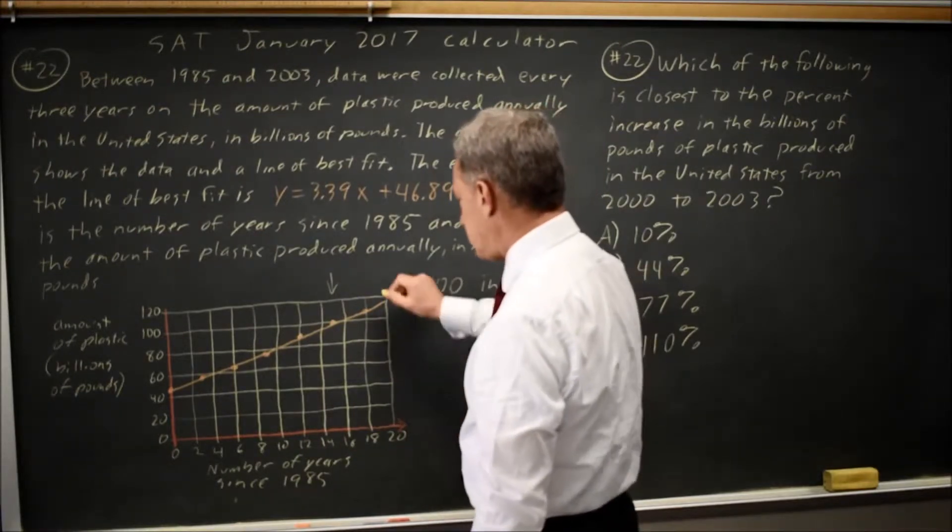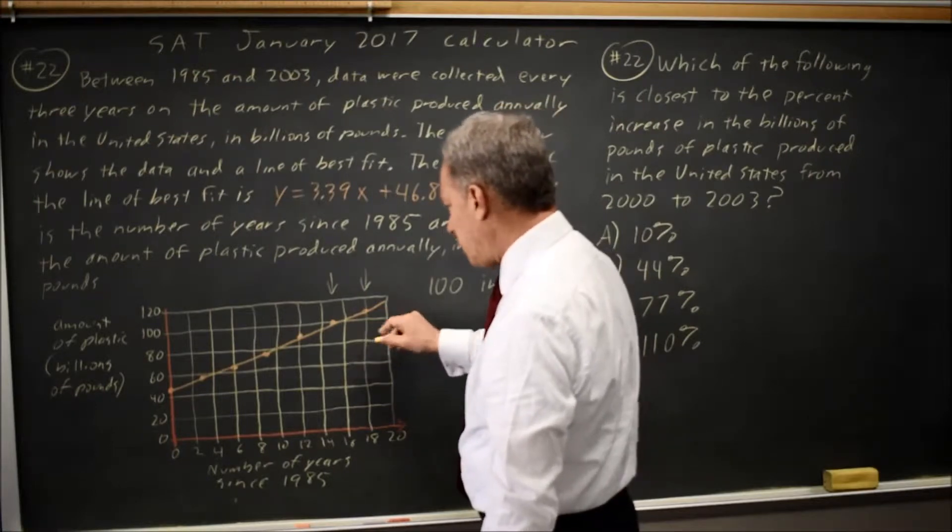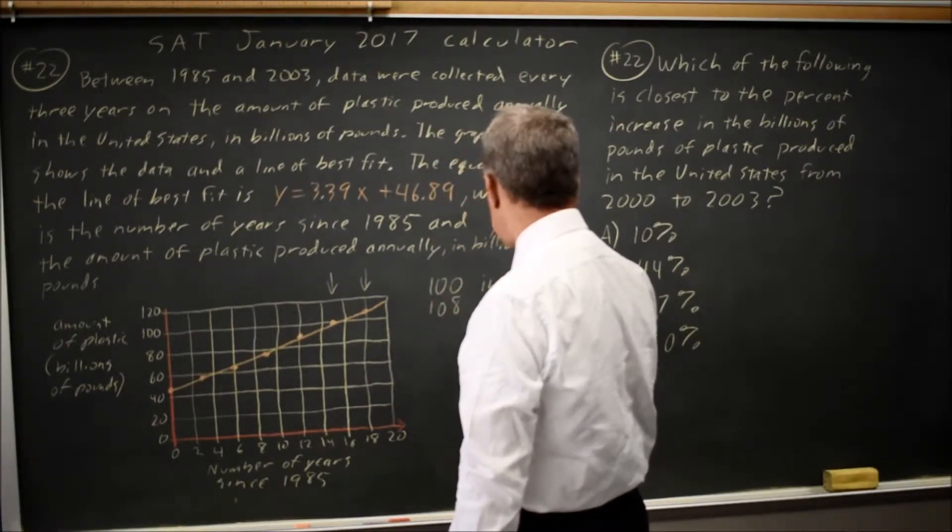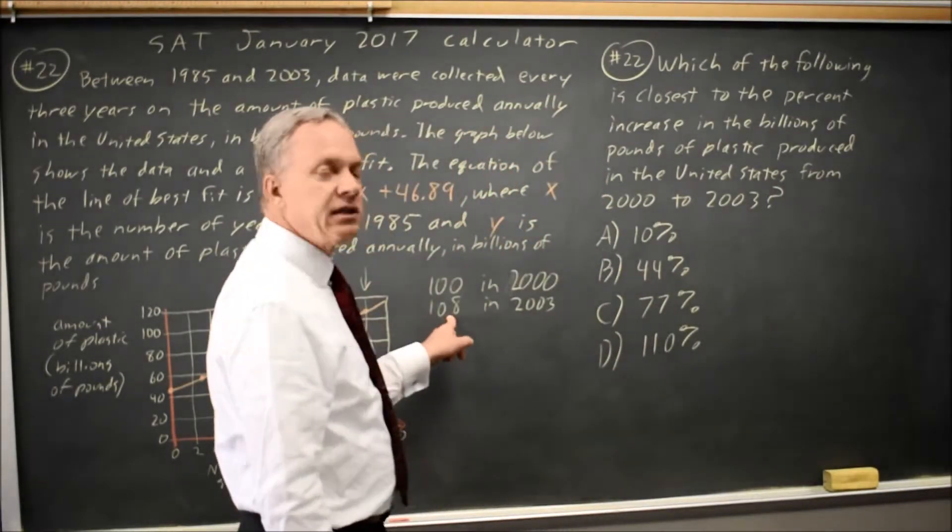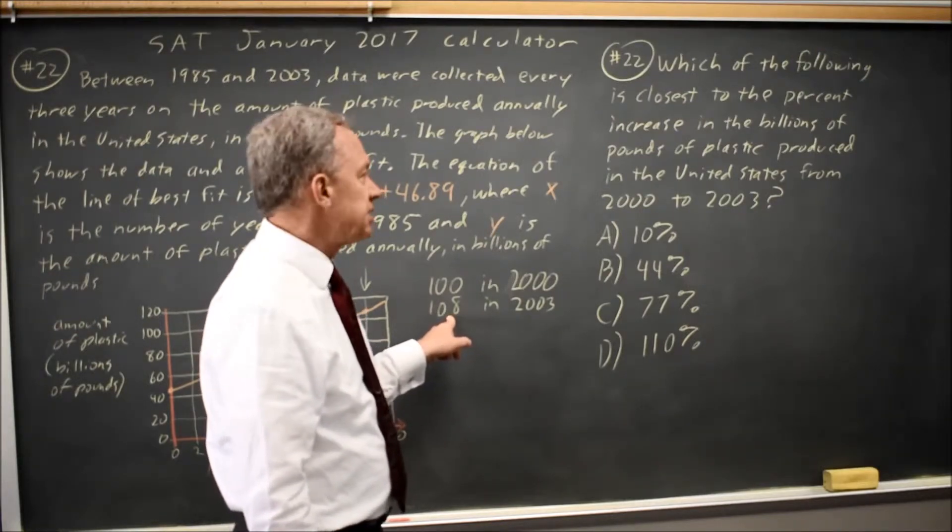And in 2003, that would be 18 years, so that would be a little under 110. I'll call that 108 in 2003. So the increase is 8 billion pounds of plastic in the United States per year.